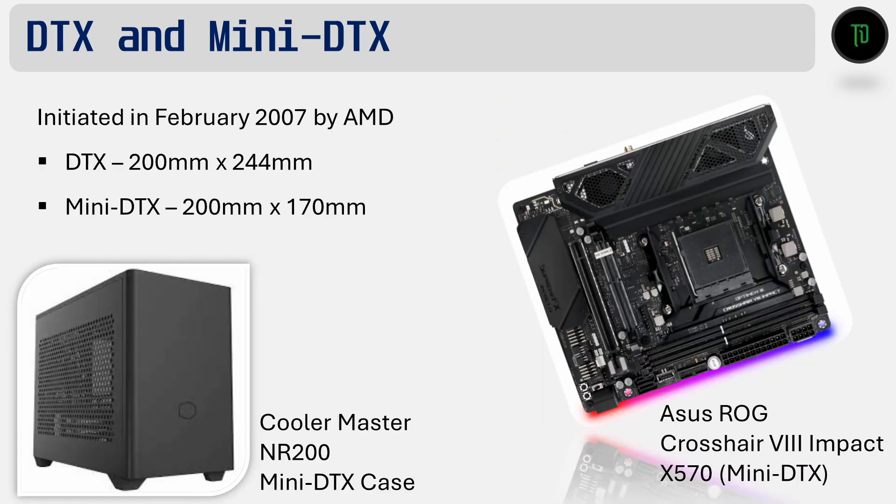Around the same time period, AMD decided to make its own small form factor motherboard standard and called it DTX. Both DTX formats are 200 mm wide, or 30 mm wider than Mini-ITX. DTX had a depth of 244 mm and Mini-DTX had a depth of 170 mm, the same as Mini-ITX. The ASUS ROG Crosshair 8 Impact is an example of a Mini-DTX board — it got some attention when it launched back in 2019 because it looked like many of the other Mini-ITX boards released at the same time, but it was slightly longer and hence got the Mini-DTX designation.